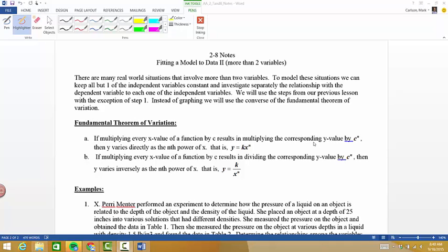All right, in section 2.8, what we're doing is continuing this idea of modeling data that we started in section 2.7, but now instead of looking at just two variables, we want to look at the idea that hey, what if there's more than two variables? How do we deal with that? Because that happens all the time. And really to do that, to model these situations, what we do is we keep all but one of the independent variables constant.